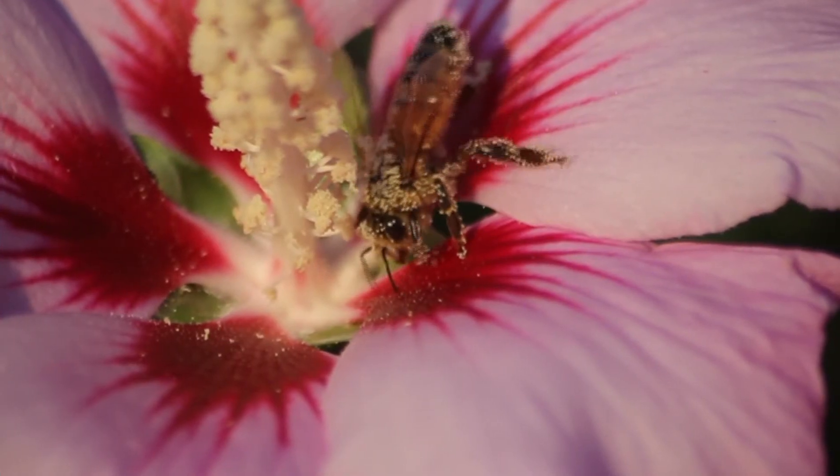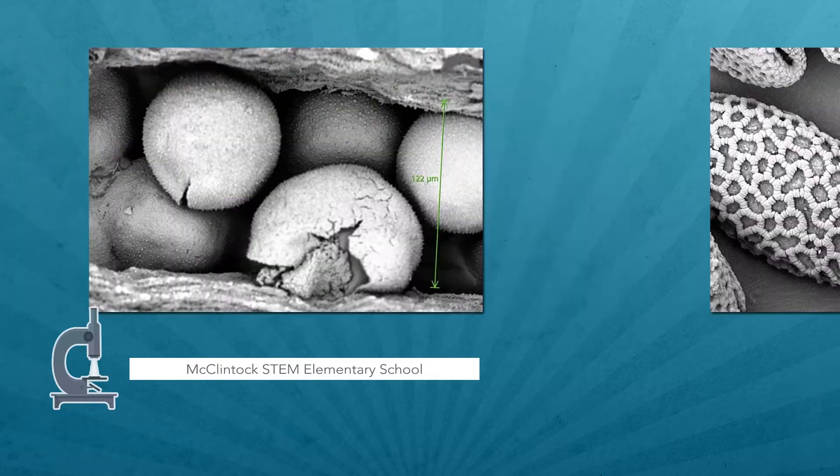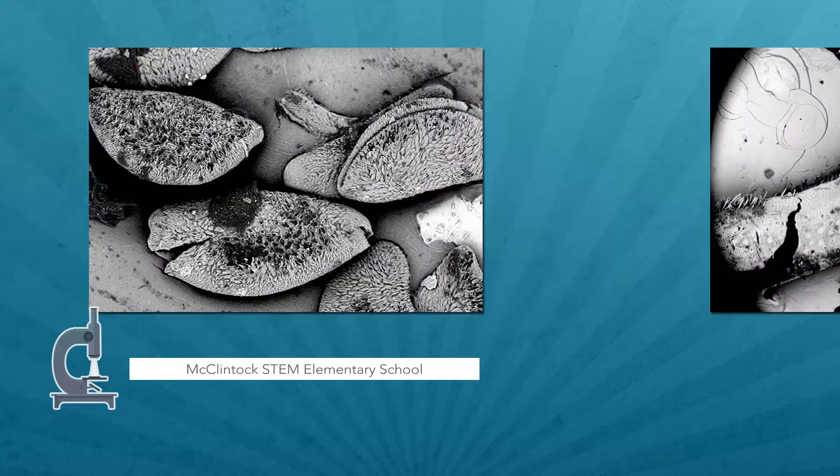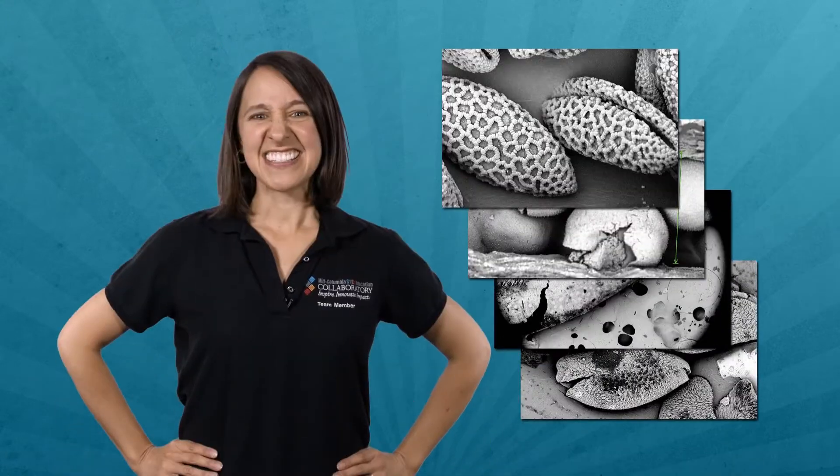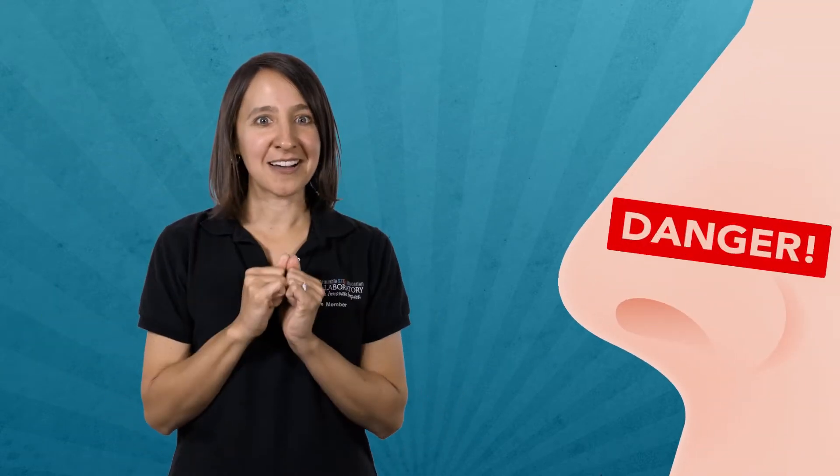Plants use pollen to reproduce. But why does it make some of us sneeze? Sixth grade students in Pasco, Washington took these images of pollen with a desktop scanning electron microscope. See the shapes and patterns? They help the pollen travel to their destination. But when that pollen winds up in our noses, our bodies treat it like dangerous foreign invaders. We fight back with snot and sneezes. Gross!